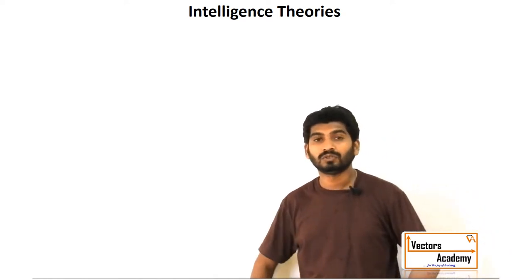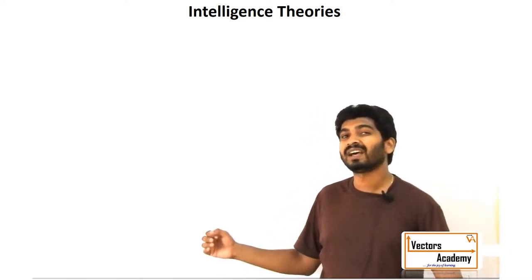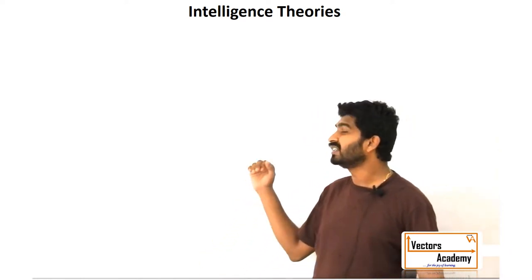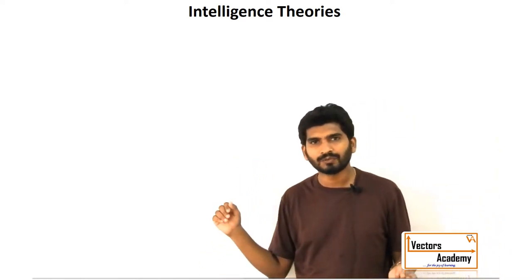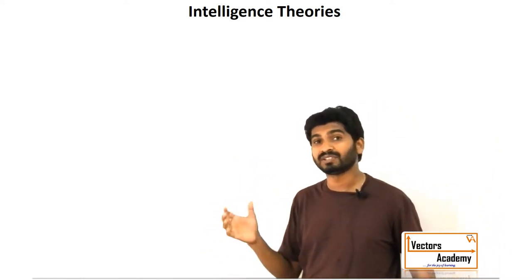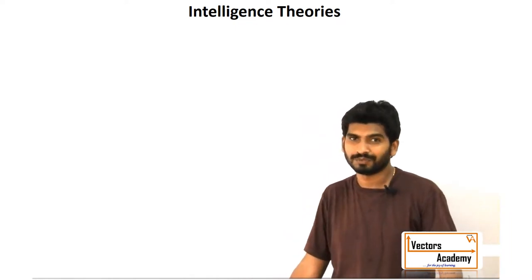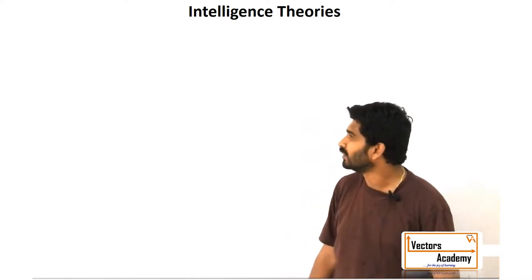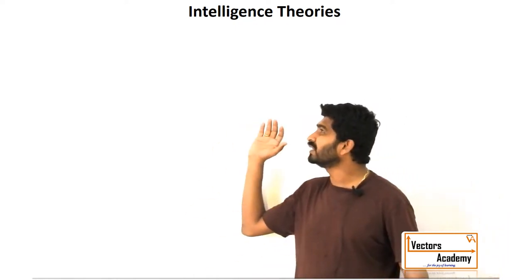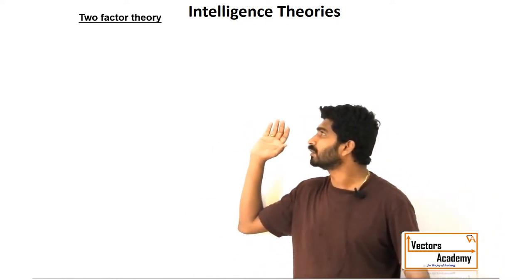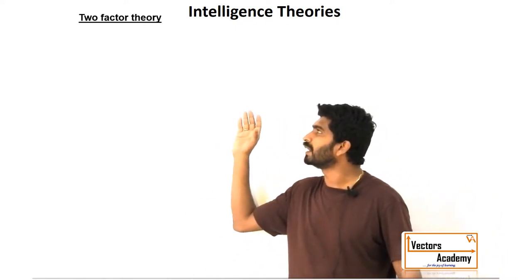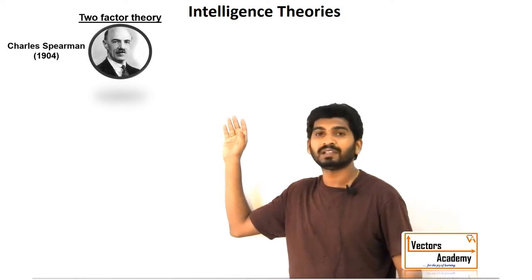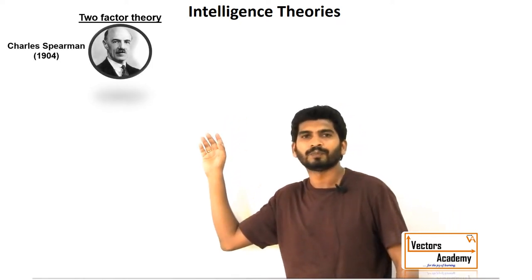Today, let us have a look at different theories which were put forward to measure the intelligence of a person. The first noted theory was proposed by Charles Spearman in 1904.